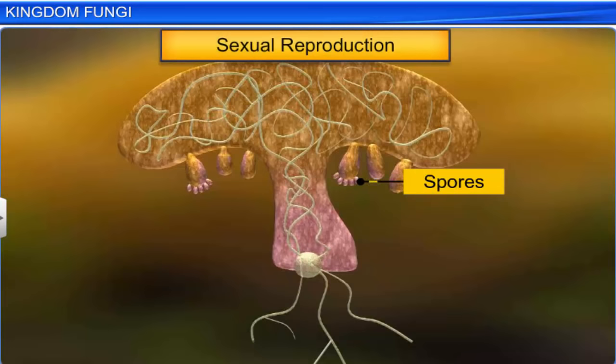Like viruses, viroids are also infectious, but they are smaller. They were first discovered by Diener in 1971. Viroids lack the protein coat that viruses have — hence the name viroid. They have free RNA of low molecular weight. They are known to cause potato spindle tuber disease.